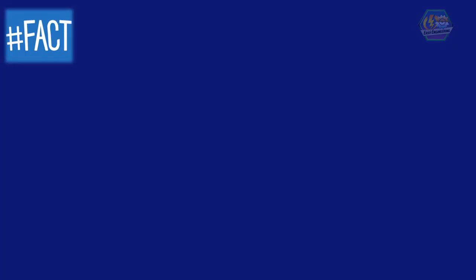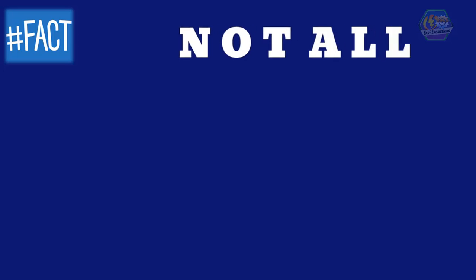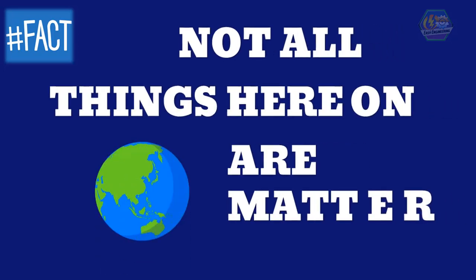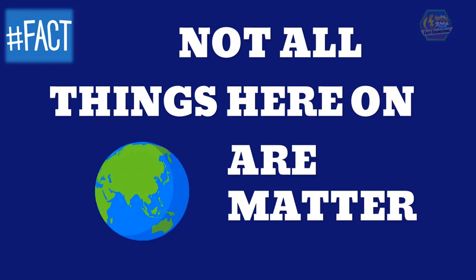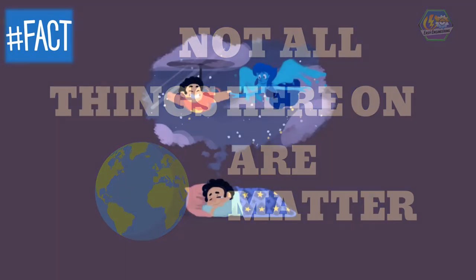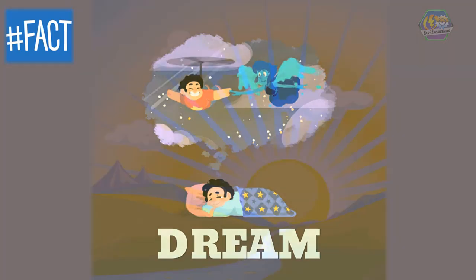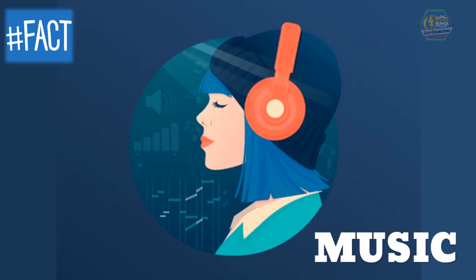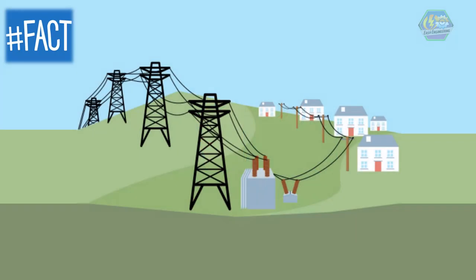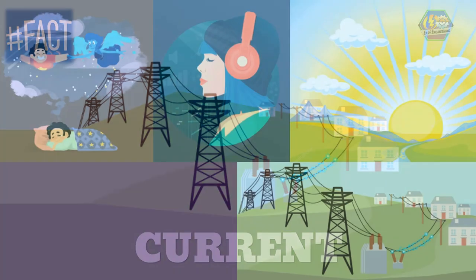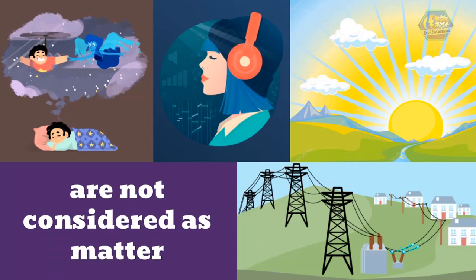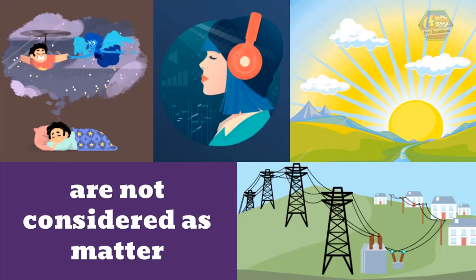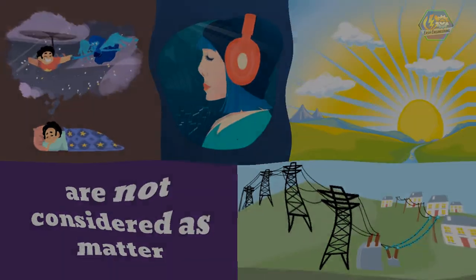Before we end, let me leave you some interesting facts. Not all things here on earth are matter. The criteria for a thing to be called matter is that it should occupy space and has mass. Dreams, light, music, electric current, and many more are not considered as matter. That is all for now. I hope you learned something today. Once again, this is Easy Engineering.